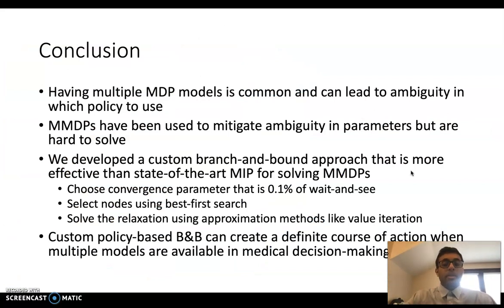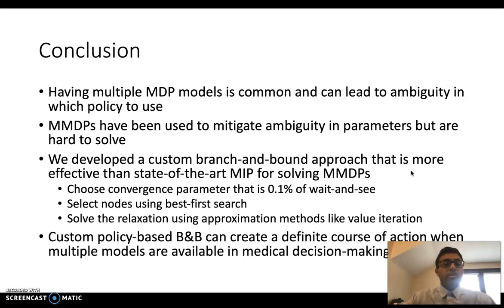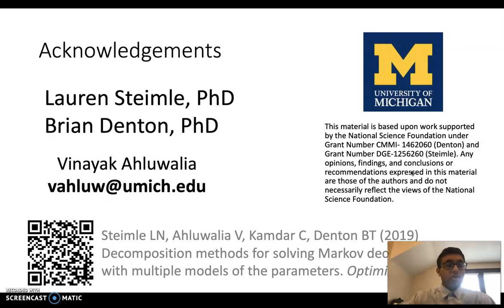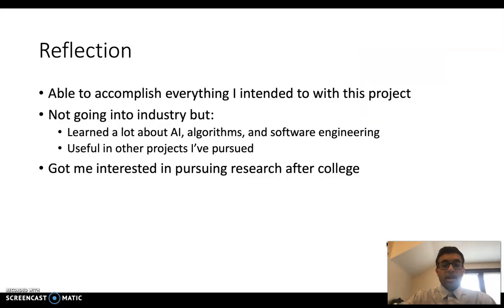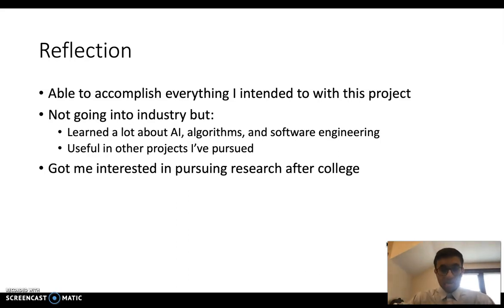In conclusion, an MMDP problem is really common and can mitigate the ambiguity in which policy to use based on conflicting healthcare information. We developed a custom branch and bound that can solve MMDPs much quicker than state-of-the-art mixed integer programming, and we created guidelines for how to best construct this algorithm. Using this MMDP branch and bound, we can create a definitive course of action when there is a lot of conflicting healthcare parameter data. I wanted to acknowledge Dr. Steinle and Dr. Denton for helping me throughout these past two years. Even though I'm not going into industry, I learned a lot about AI algorithms and software engineering, and I'm really interested in pursuing research after college. Thank you so much.